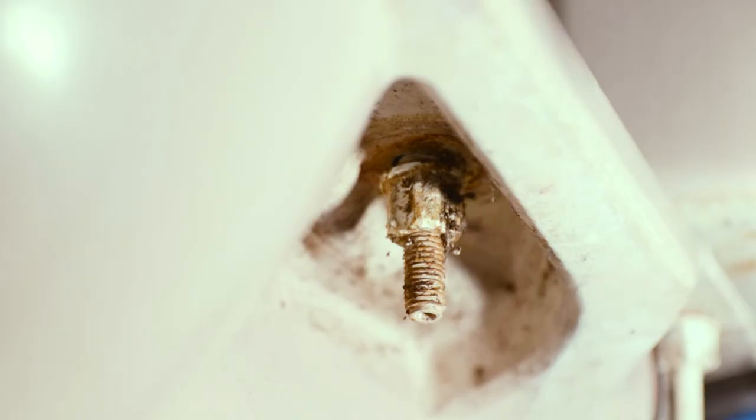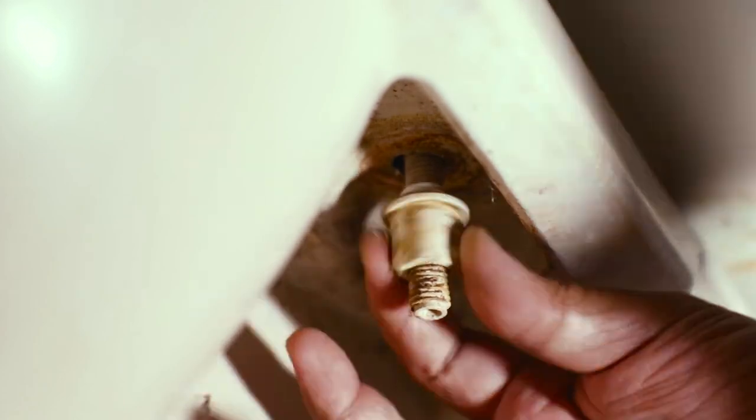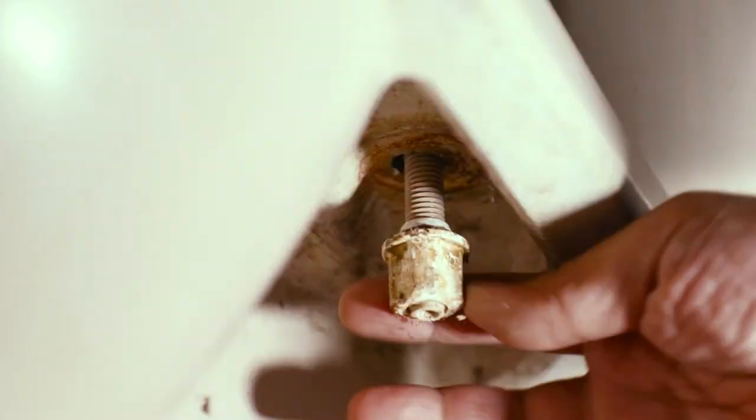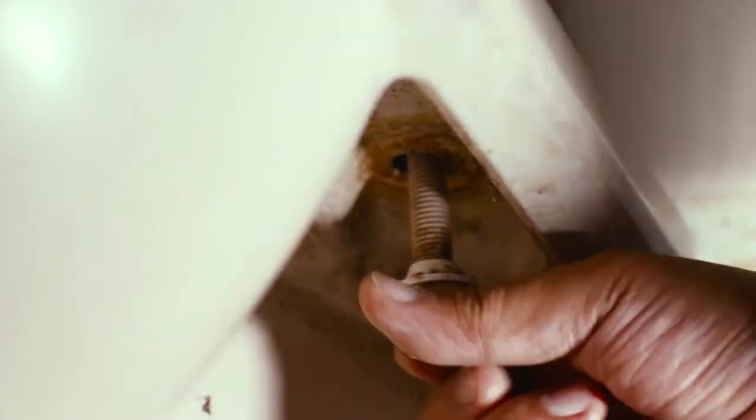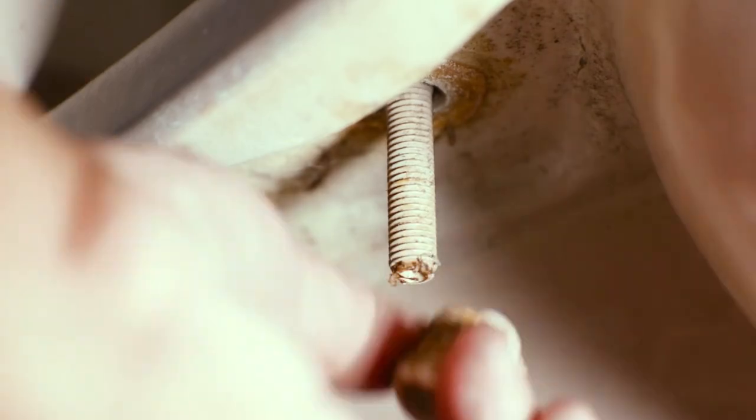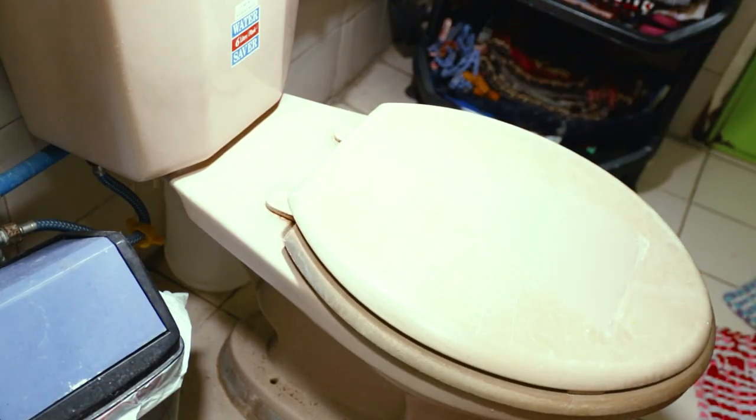After removing the plastic nuts on both sides, you should be able to remove the entire toilet seat and cover assembly. I like the design of this old toilet seat because you don't need any tools and the bolts are attached permanently to the hinge. So you don't need to apply any counter force and the bolts stay in place while you're twisting the plastic nuts.